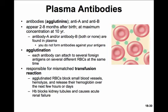Agglutinated red blood cells block small blood vessels, hemolyze, and release their hemoglobin over the next few hours and days. This hemoglobin blocks the kidney tubules and causes acute renal failure. Transfusing the wrong blood is a big deal.